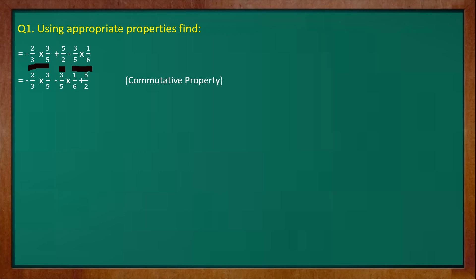Now we can take 3 by 5 common from the first term and second term. So we are left behind with bracket minus 2 upon 3 and minus 1 upon 6 from the second term plus 5 upon 2. This is called distributive property of multiplication over subtraction because we have taken common from term 1 and term 2.